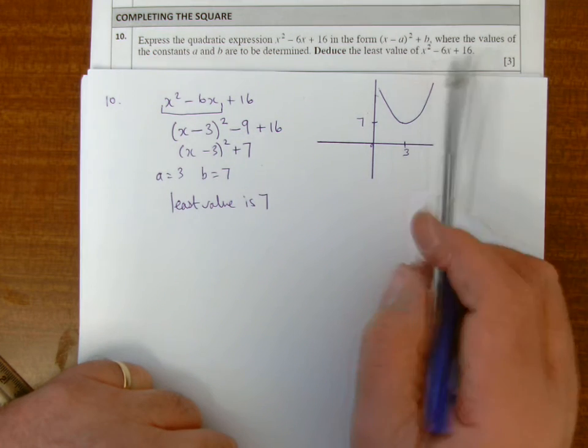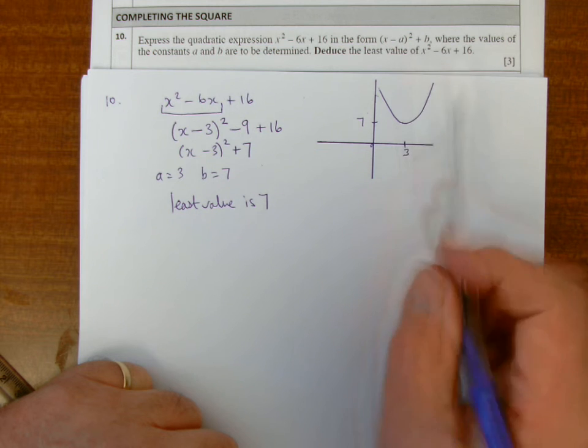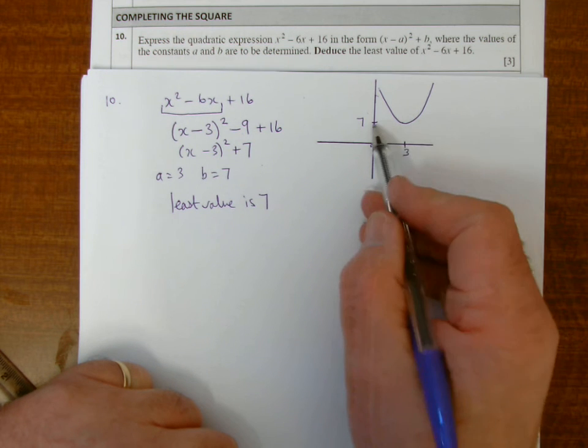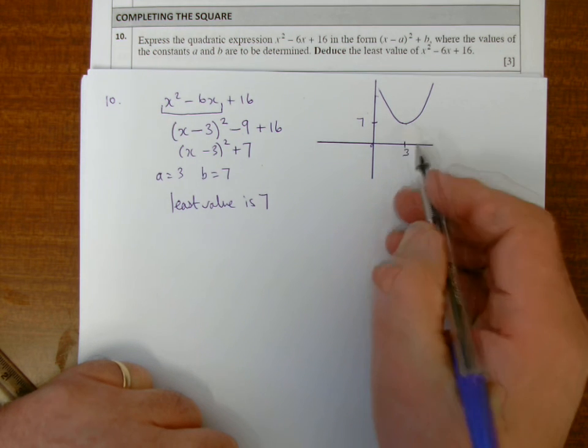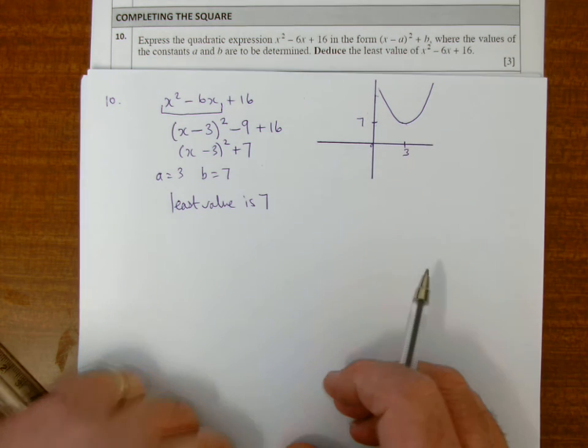It doesn't ask me this question, what value of x is that occurred, but if I need to do that, I can see the least value of 7, and that's occurring when x equals 3.